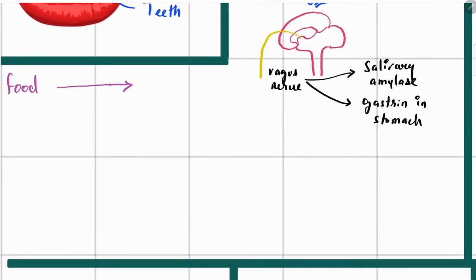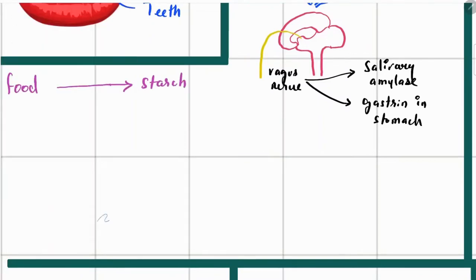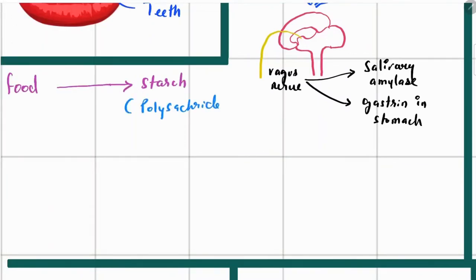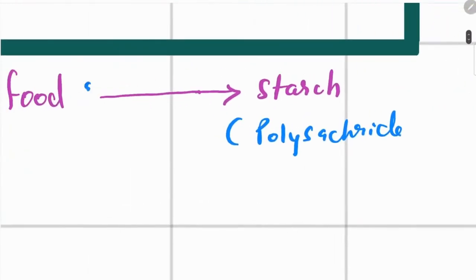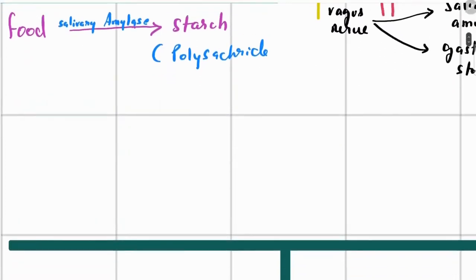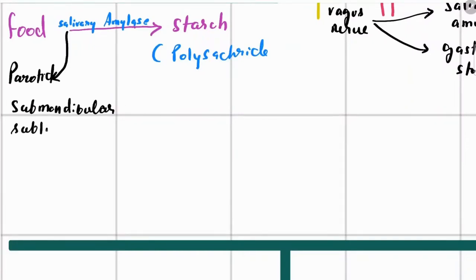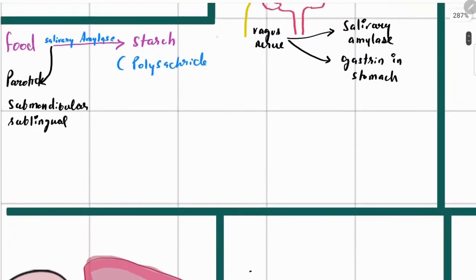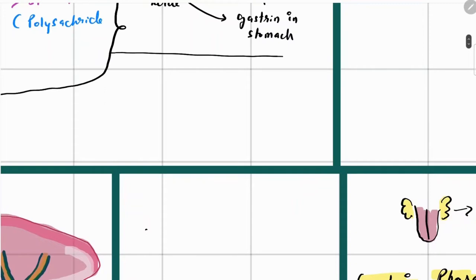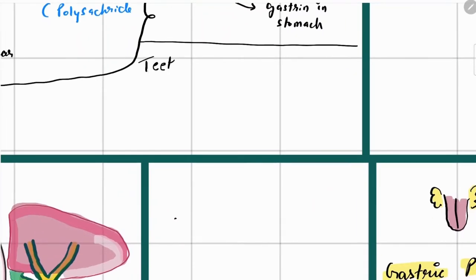The food that you eat is broken down into starch, which is a type of polysaccharide. Salivary amylase is responsible for the chemical breakdown of food into starch. There are three types of salivary glands that secrete salivary amylase: the parotid gland, the submandibular gland, and the sublingual gland. Saliva is responsible for chemical digestion of food, while teeth are involved in mastication, through which food is mechanically broken down into smaller pieces so that saliva can act on it.